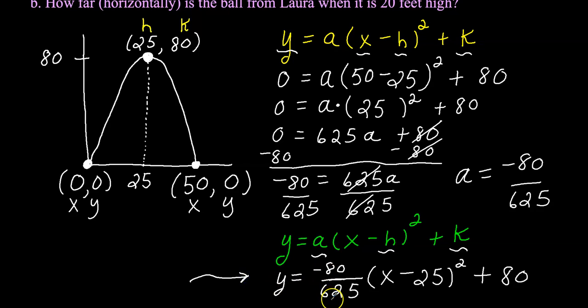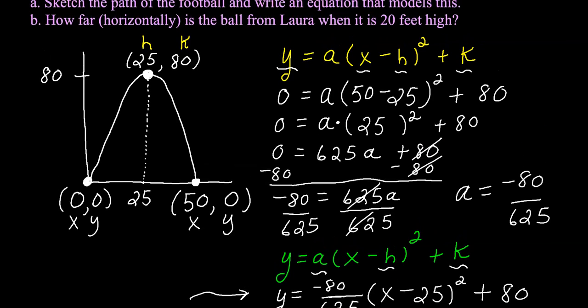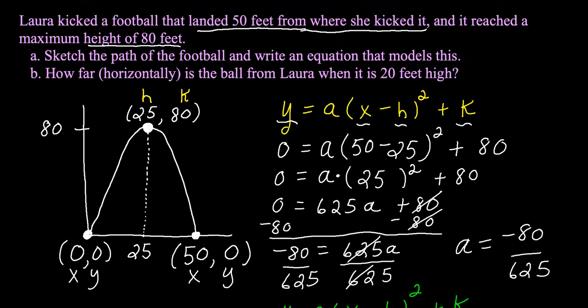Y equals negative 80 divided by 625 times X minus 25 squared plus 80. This equation models this graph. And I'm going to show that to you in a second. So that is the first part of this problem. And there's a lot there. I don't want you to feel too overwhelmed. But let's go to part B because we're not quite done. So we answered part A.